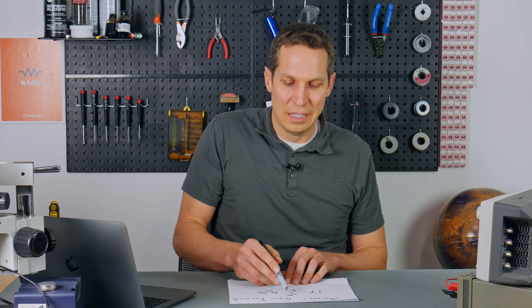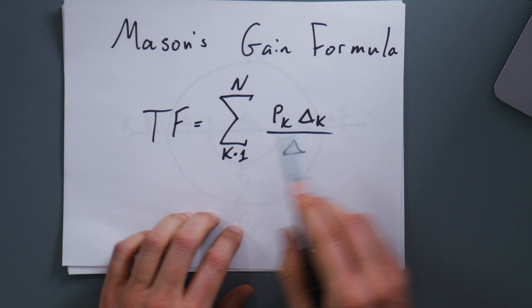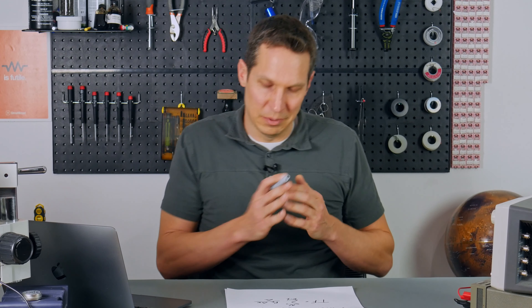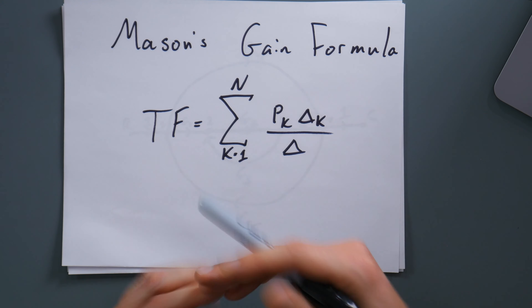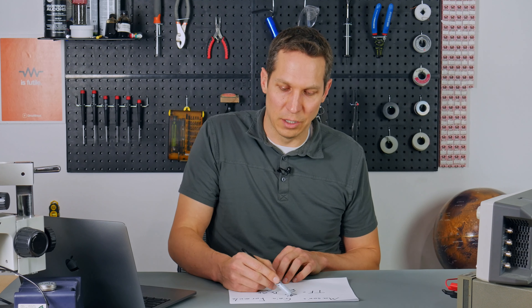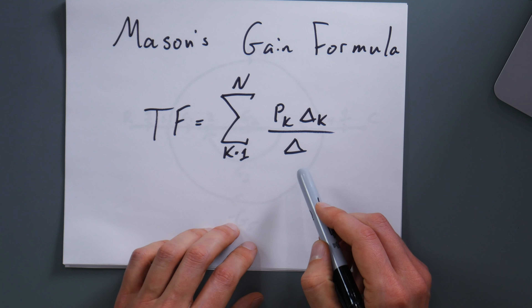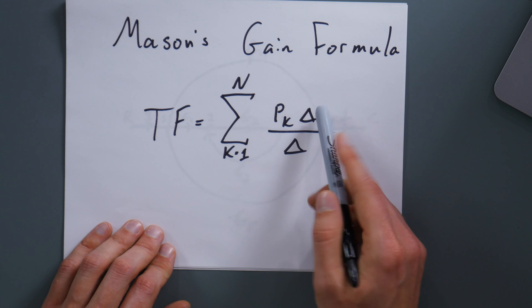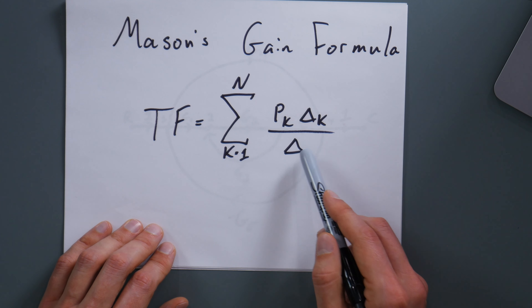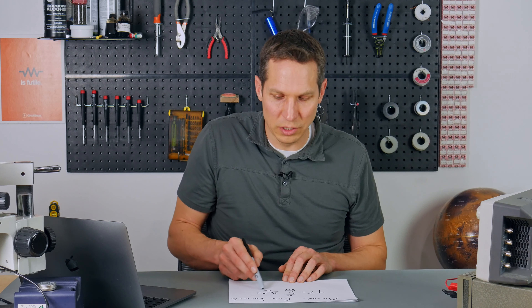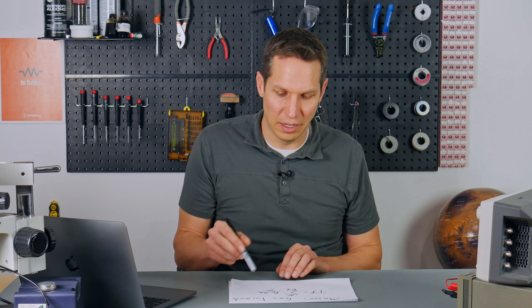We have now gotten to the point where we can start talking about Mason's law, or more precisely, Mason's gain formula. Mason is the person who developed this whole thing and created a way to take the signal flow graph and derive a transfer function. Every branch needs an arrow — that is important. So let me draw up the example signal flow graph and walk through Mason's gain formula to figure out transfer functions.